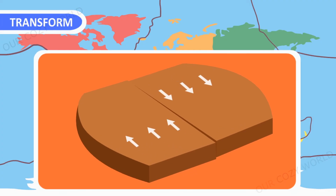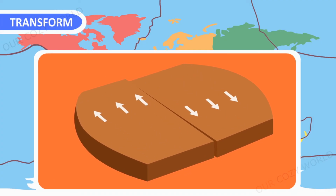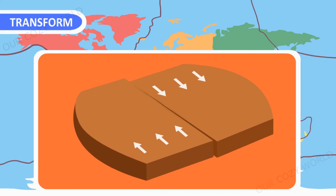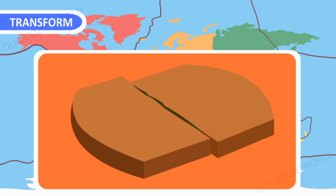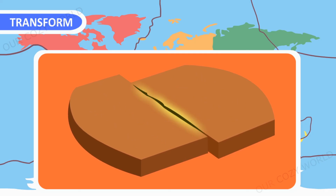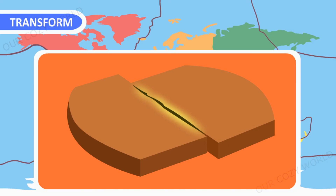The final way of plate shifting is a transform fault, where two plates slide past one another in opposite directions at different speeds. Due to friction, tension is created which builds up, and an earthquake occurs.